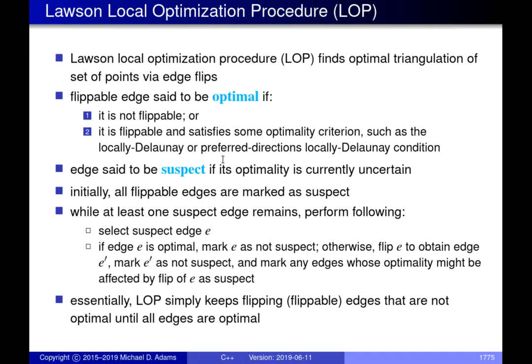The next topic is the algorithm for computing triangulations, called the Lawson Local Optimization Procedure. It is a bit more general than just computing Delaunay triangulations, but it is presented here for that purpose. A flippable edge is said to be optimal with respect to this procedure if it is either not flippable, or it is flippable and satisfies an optimality criterion — either the locally Delaunay test or the preferred directions locally Delaunay test.